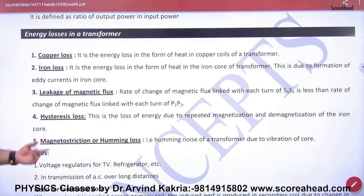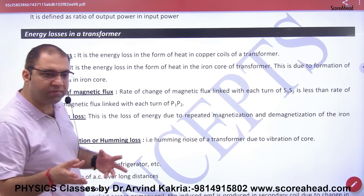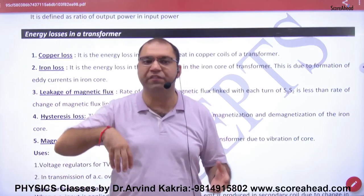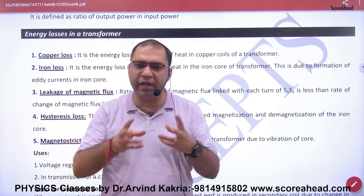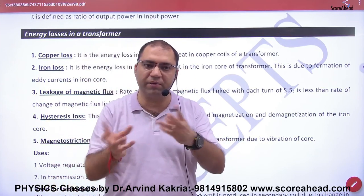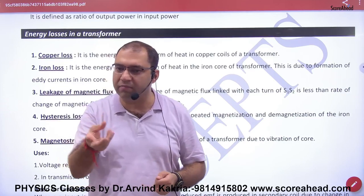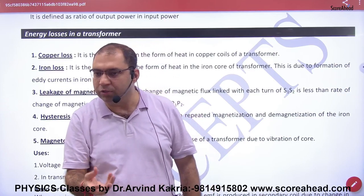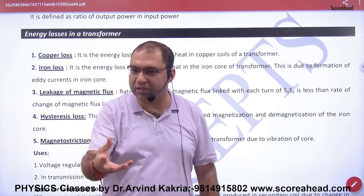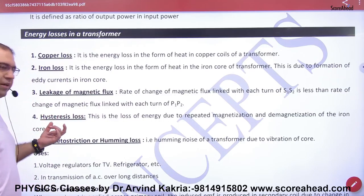Next is hysteresis loss. The atoms inside the transformer core, when you change the current, the magnetic field changes. So the atoms inside undergo hysteresis — sometimes they become magnetized, sometimes demagnetized. This repeated cycling causes the core to become warm, and this is known as hysteresis loss.